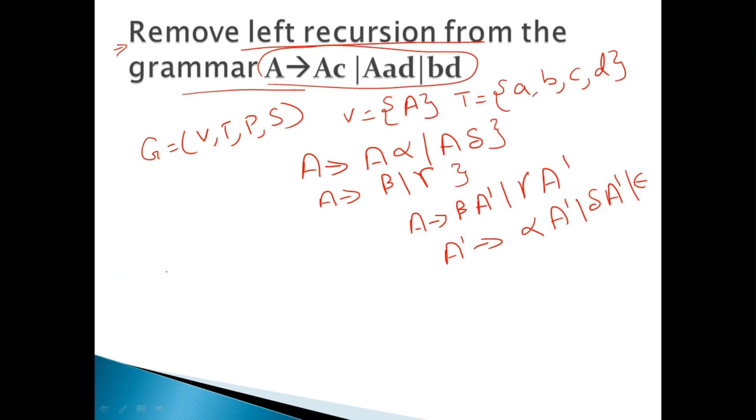So consider the given grammar. A is rewritten as A C, A A D, and B D. Comparing with these rules, we can have this as alpha, as delta, and beta.